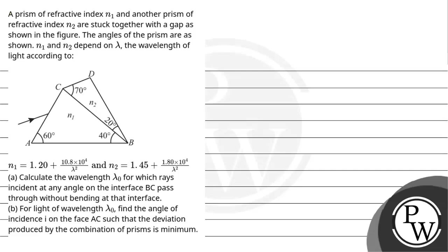Hello. Let's read this question. A prism of refractive index n1 and another prism of refractive index n2 are stuck together with a gap as shown in the figure. The angles of the prism are as shown. n1 and n2 depend on lambda, the wavelength of the light.